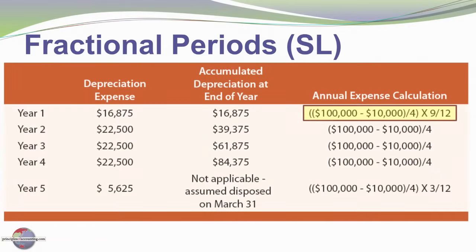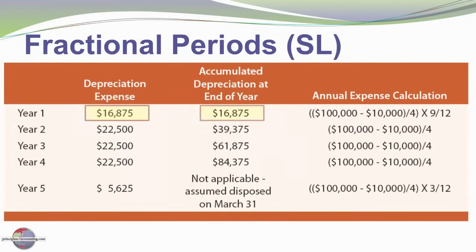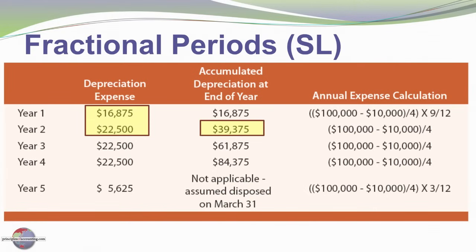Here's the calculation: the depreciable base is $100,000 minus $10,000 salvage value. The $90,000 depreciable base divided by four years gives us an annual amount of $22,500. We're only going to take nine-twelfths of that, representing nine out of 12 months in the first year, so we get depreciation expense of $16,875, giving us our accumulated depreciation. In the next year, we'll book a full year's worth of depreciation, or $22,500, and our accumulated depreciation has grown to $39,375 by the end of the second year of use.